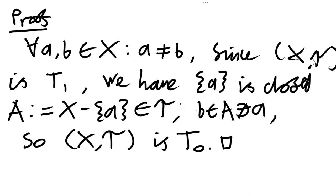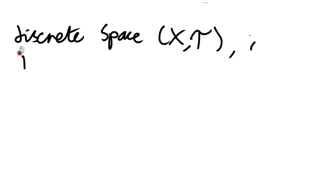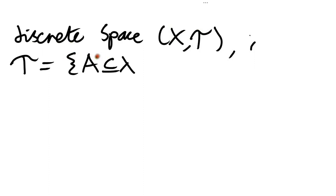Now let's have a look at some examples to solidify these concepts. A fairly simple example is the discrete space for some non-empty set X. Recall that the discrete space has the set of all subsets as the set of open sets — every single subset of X is considered to be an open set. So tau is just equal to the power set of X. I claim that this is a T1 space.